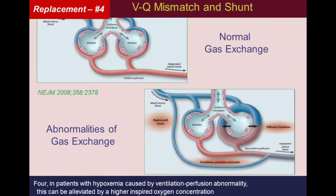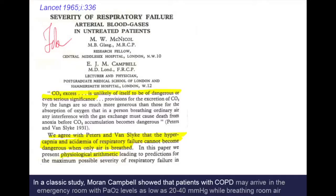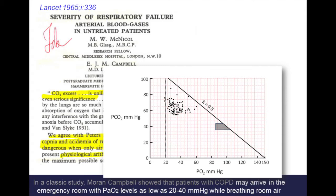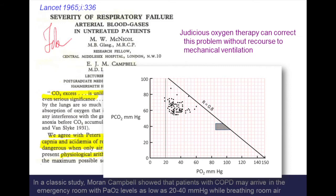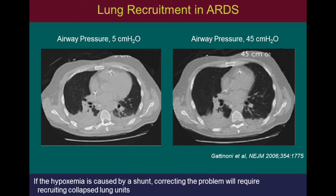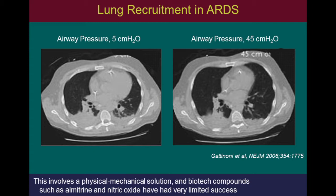Four: in patients with hypoxemia caused by ventilation-perfusion abnormality, this can be alleviated by a higher inspired oxygen concentration. In a classic study, Maureen Campbell showed that patients with COPD may arrive in the emergency room with PO2 levels as low as 20 to 40 mmHg while breathing room air. Judicious oxygen therapy can correct this problem without recourse to mechanical ventilation. If the hypoxemia is caused by an intrapulmonary shunt, correcting the problem will require recruiting collapsed alveolar lung units — a physical mechanical solution — and biotech compounds such as almitrine and nitric oxide have had very limited success in this area.